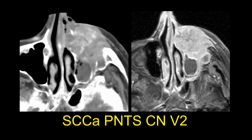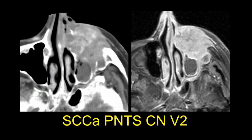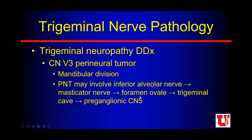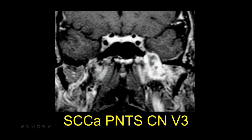For cranial nerve V3 perineural tumor spread — the mandibular division — tumor may travel from the mandible along the inferior alveolar nerve up through the masticator space to foramen ovale, reaching Meckel's cave. From there it may spread anteriorly along V1 or V2, or go posteriorly along the cisternal segment back to the pons. On a coronal post-contrast MR at the level of the pituitary, we see widening and excessive enhancement of foramen ovale compared to the normal-looking V3 on the other side — this patient had a tumor below V3 crawling up and widening ovale.